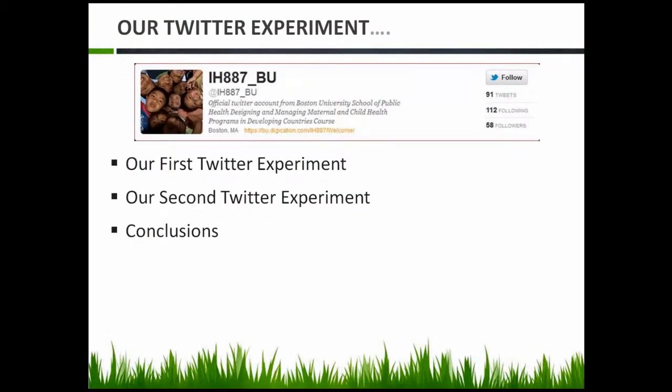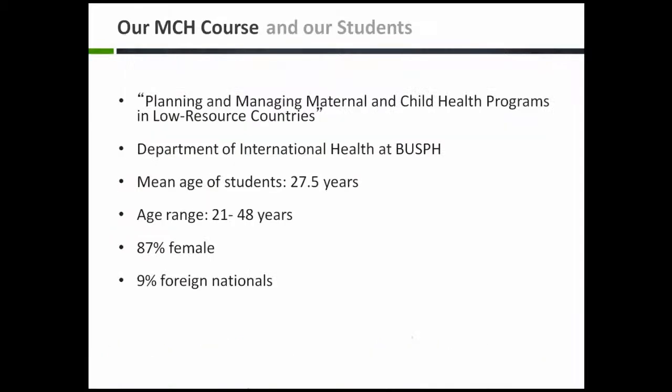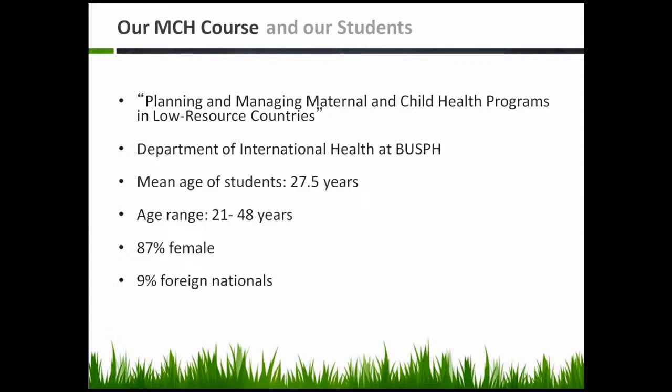This talk is going to cover two experiments that I've done in the classroom in the last couple of years. Let me tell you a little bit about the course we're using Twitter in. It's called Planning and Managing Maternal and Child Health Programs in Low Resource Settings, taught in the Department of International Health at BUSPH. The mean age of students is about 27 and a half years, with an age range of 21 to 48 years.